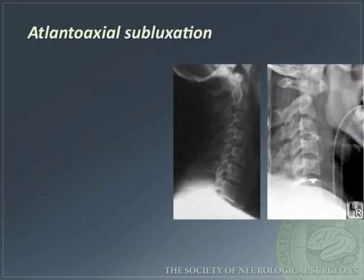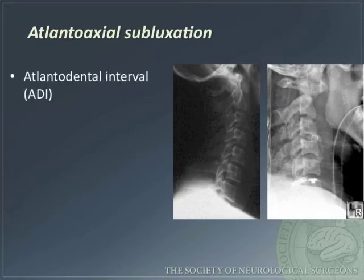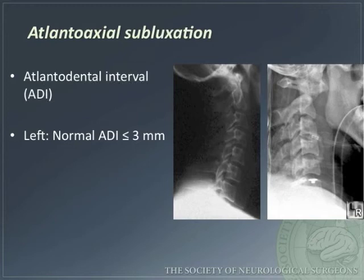Atlanto-axial subluxation is defined by the atlanto-dental interval (ADI). A normal variant has an ADI of less than 3 millimeters. On the right is an example of C1-C2 subluxation — note the expanded ADI.